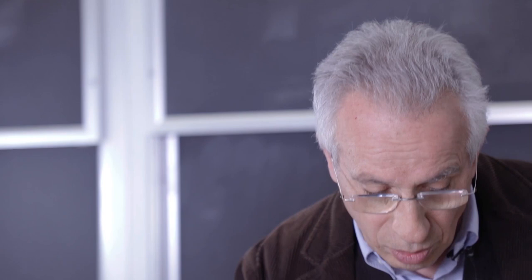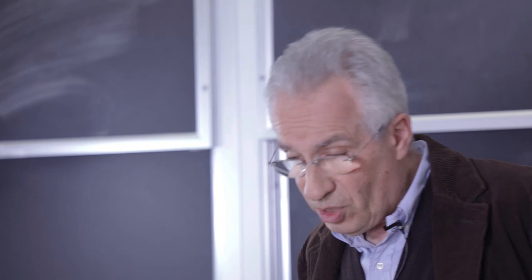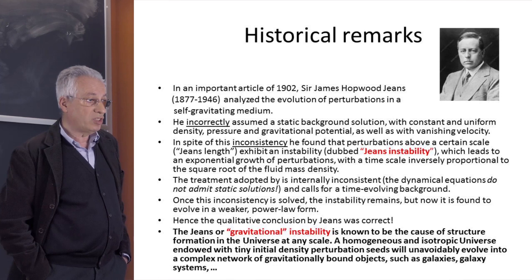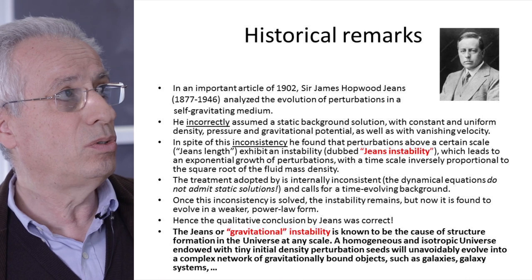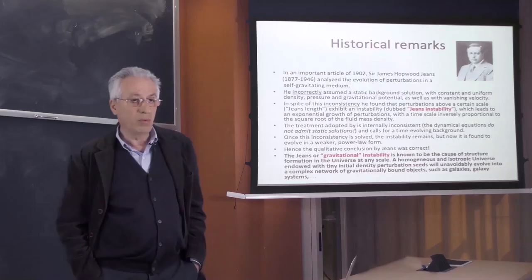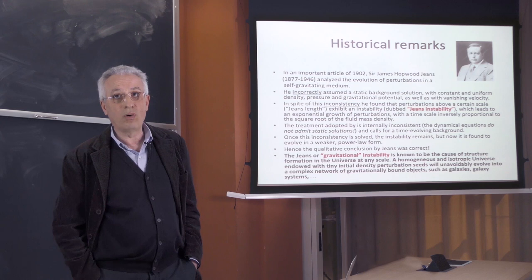It's important to start this discussion with a short historical introduction. Sir James Jeans, at the beginning of the last century, was essentially the first to discuss how a medium made of self-gravitating fluid elements, self-gravitating particles, gave rise to what we now call the Jeans instability or gravitational instability. What he did was to take the equations governing the evolution of a fluid — continuity, Euler equation, and the Poisson equation — and look at small perturbations.